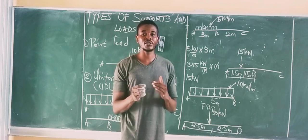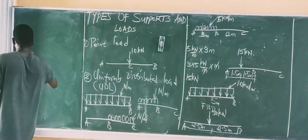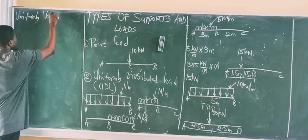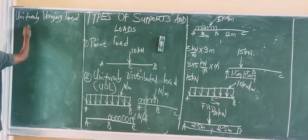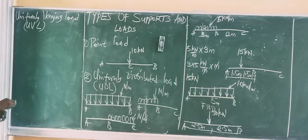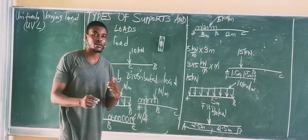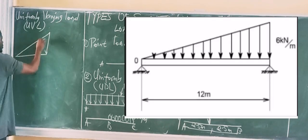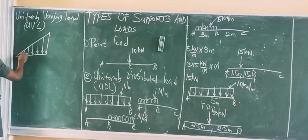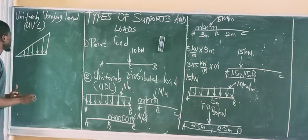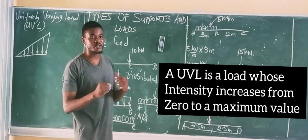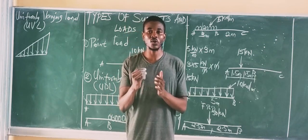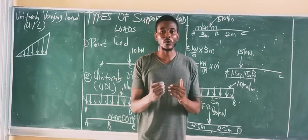The next kind of load is called a Uniformly Varying Load, or UVL. The UVL takes a triangular shape. It is called a uniformly varying load because its intensity starts from zero and increases up to a maximum value.